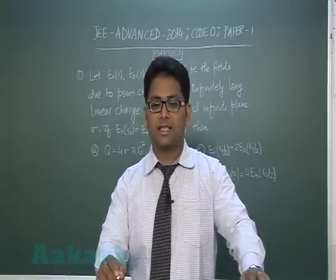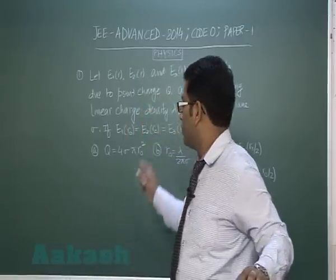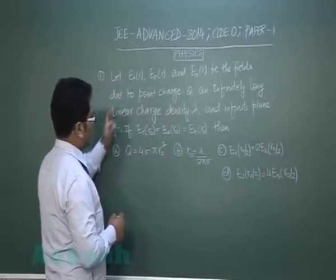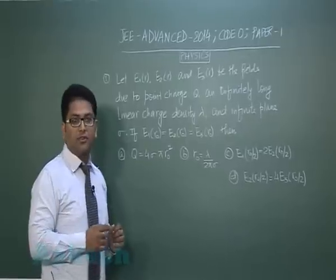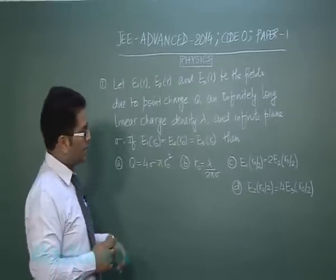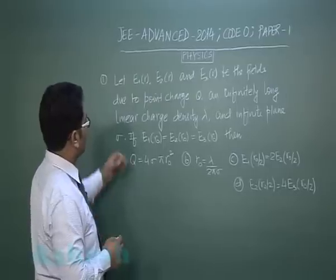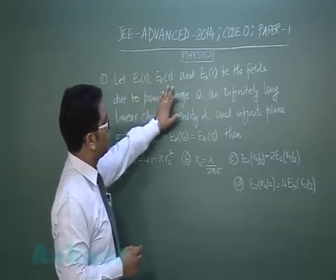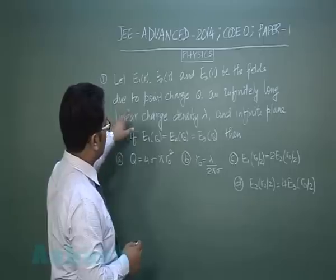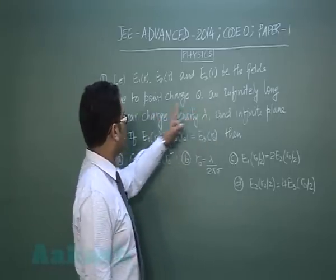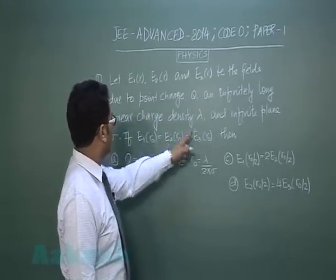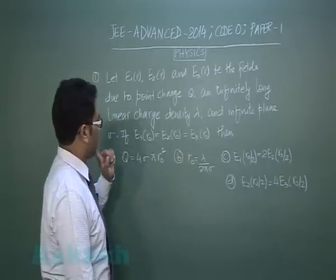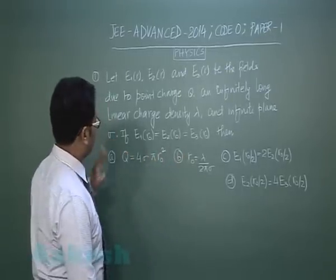First, we'll start with Section 1, Question 1. The question is from electrostatics and is almost direct formula-based. E1(r), E2(r), and E3(r) are the fields due to point charge q, an infinitely long linear charge density λ, and an infinite plane with surface density σ. At distance r0, the electric fields are equal.